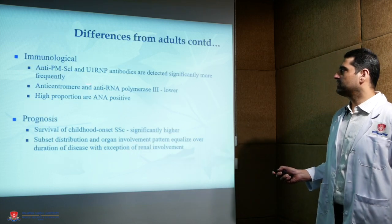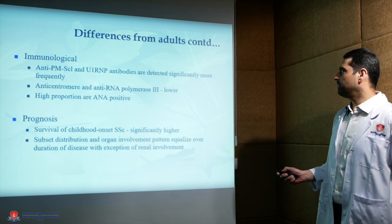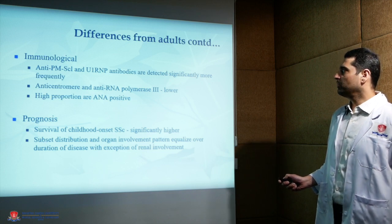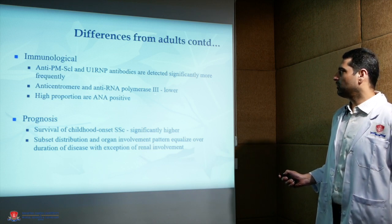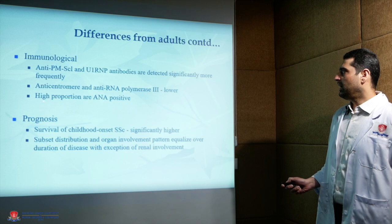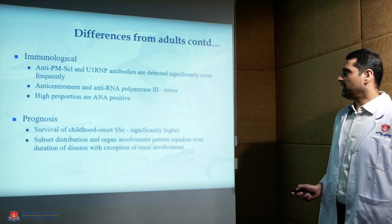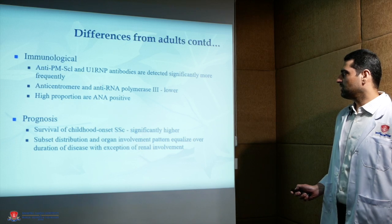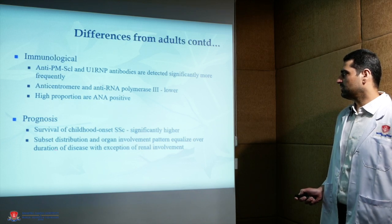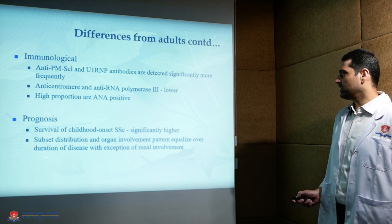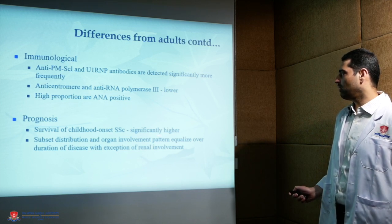Immunologically, anti-PMSCL and U1-RNP antibodies are detected significantly more frequently, while anti-centromere and anti-RNA polymerase 3 are lower. There is a high proportion of ANA-positive patients. Survival of childhood-onset systemic sclerosis is significantly higher, and subset distribution and organ involvement pattern equalize over the duration of disease, with the exception of renal involvement.